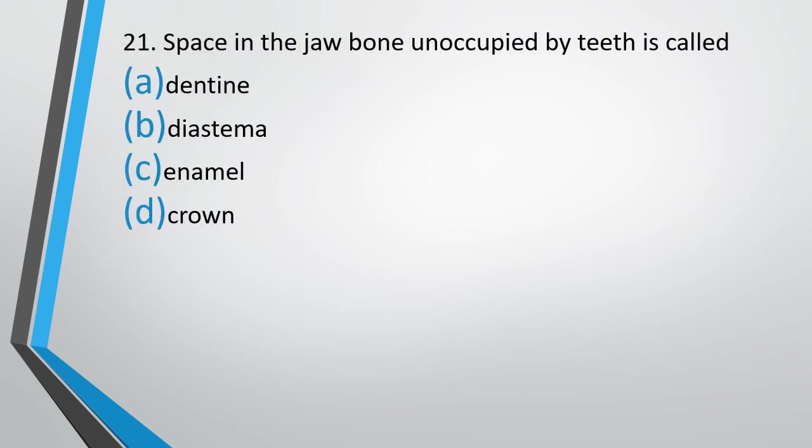Question number 21. Space in the jawbone occupied by teeth is called: dentine, diastema, enamel, or crowned. The correct answer is option B — diastema.